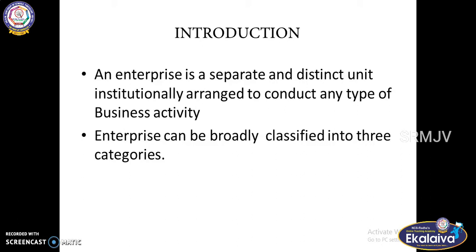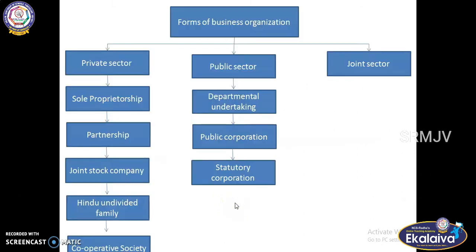This legal structure determines the extent of ownership and responsibility of the enterprise. Once selected, changing the form is quite complex, time-consuming and costly. Forms of organization can be classified into three categories: private, public, and joint sector.